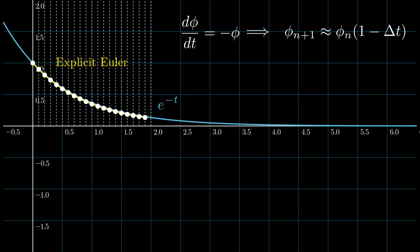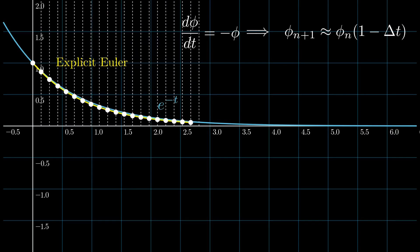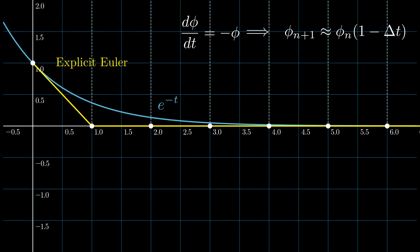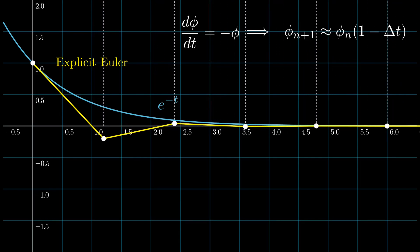What if we focused on speed at the expense of accuracy by increasing delta t? A delta t of 1 looks okay — phi immediately goes to 0 and stays there, which still resembles the correct solution since e to the minus t also approaches 0. At delta t of 1.2, we start to see issues: phi goes negative, then bounces back to positive, then negative again, and eventually settles at 0. This is called instability.